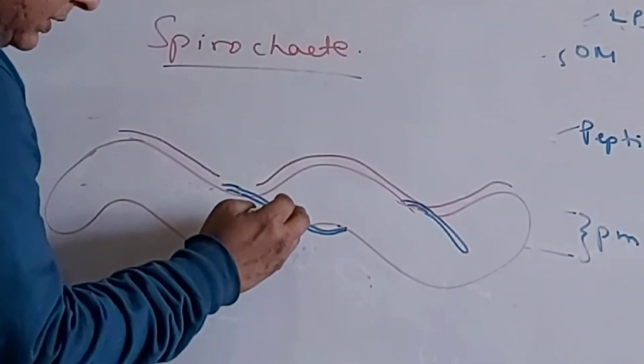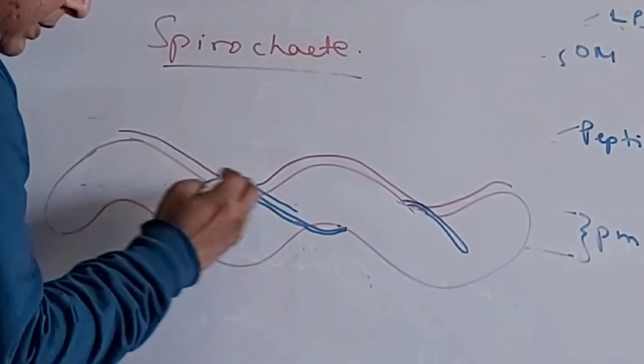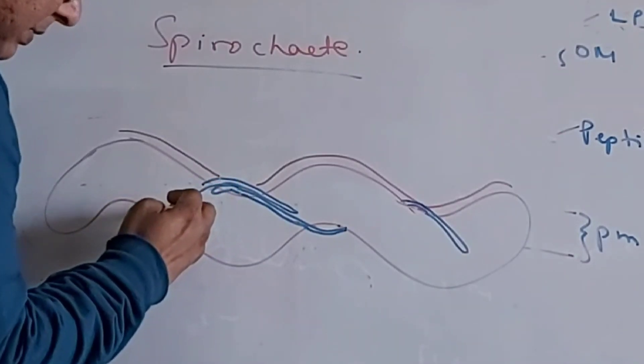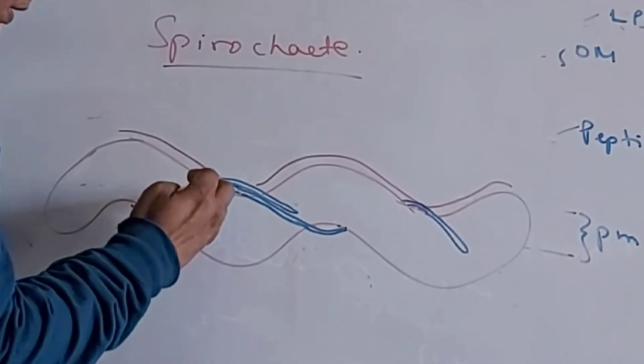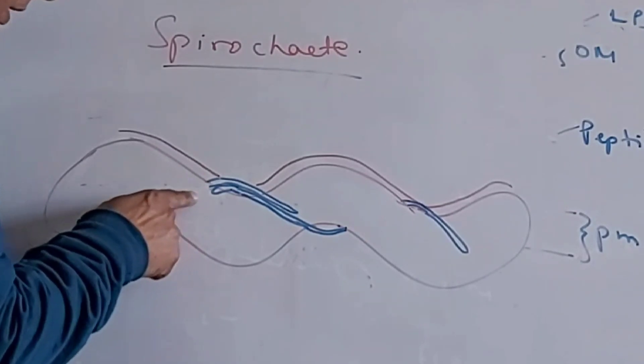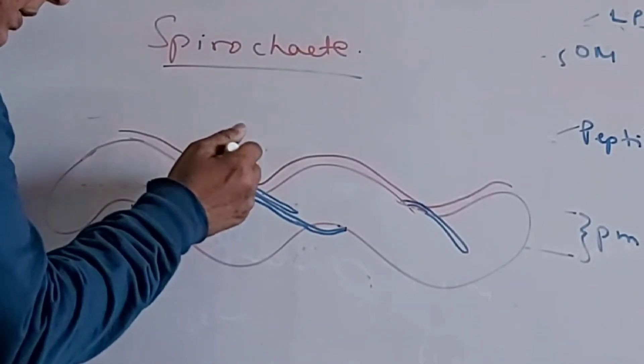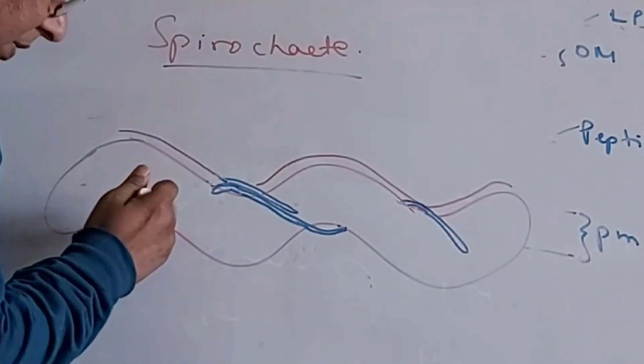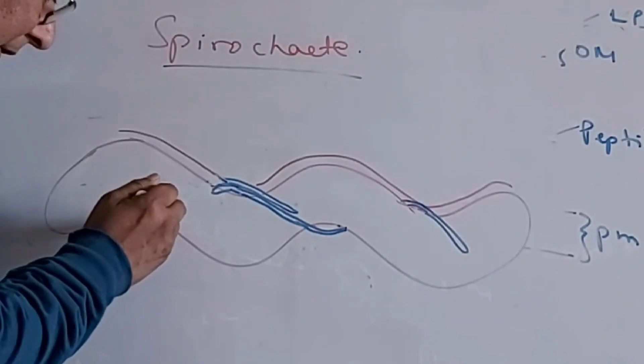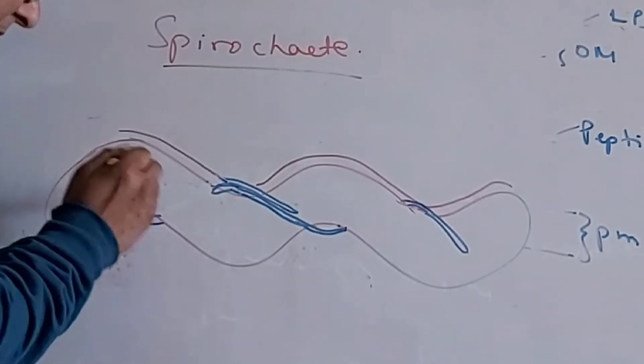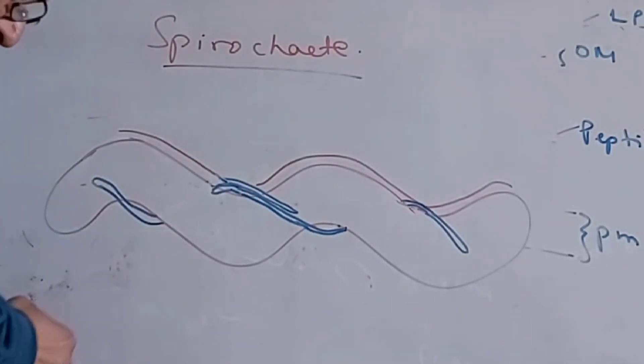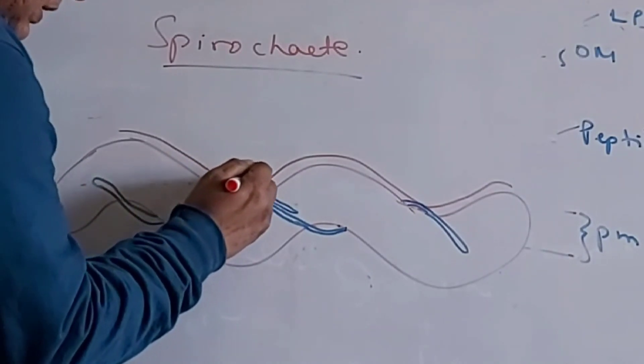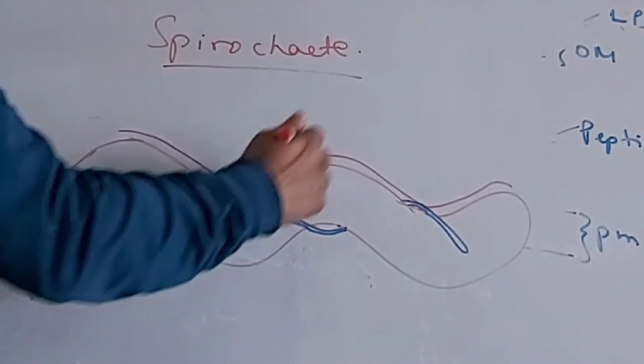And then there is another one which is starting from here. And there, it will move like this on the other side. You may take it that it is coming from the back. It is coming from the back of the cell. This filament is coming from the back. And it is there on this side like this. So this is present within the periplasm, just below the outer membrane.